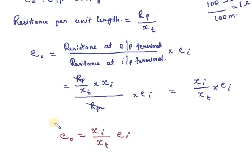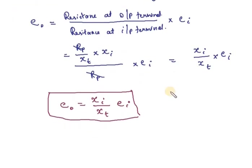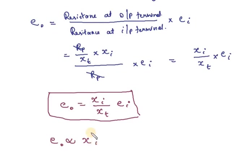So we can write: E output = XI divided by XT into EI. We can say that the output voltage is directly proportional to XI, meaning output voltage varies according to the displacement.